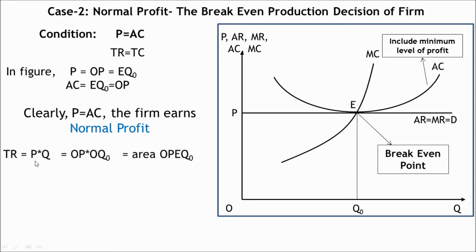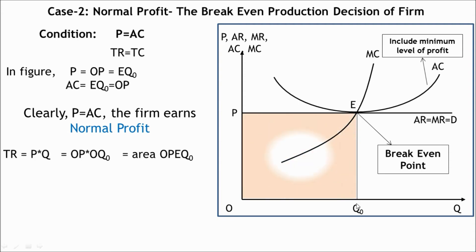Multiplying price by quantity, we can have total revenue. For OQ0 output level, price is OP. Therefore, total revenue equals P multiplied by Q equals OP multiplied by OQ0. In the figure, vertical distance OP multiplied by horizontal distance OQ0 yields the area of the rectangle OPEQ0, shown by the orange colored area.